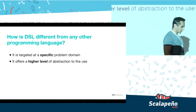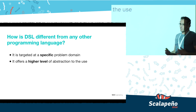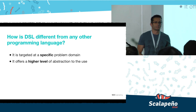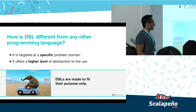The second point is that DSLs offer a higher abstraction of the problem. What does that actually mean? When you implement a DSL, you don't really care about the underlying implementation. You just want to tell it what you want and get it. You don't care about data structures, memory, or cloud engines. Basically, DSLs are made to fit their purpose only.